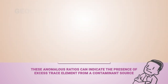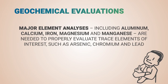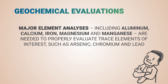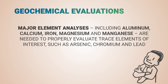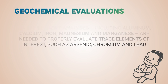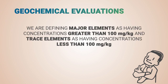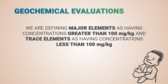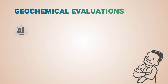Major element analyses, including aluminum, calcium, iron, magnesium, and manganese, are needed to properly evaluate trace elements of interest, such as arsenic, chromium, and lead. We are defining major elements as having concentrations greater than 100 mg per kg, and trace elements as having concentrations less than 100 mg per kg.